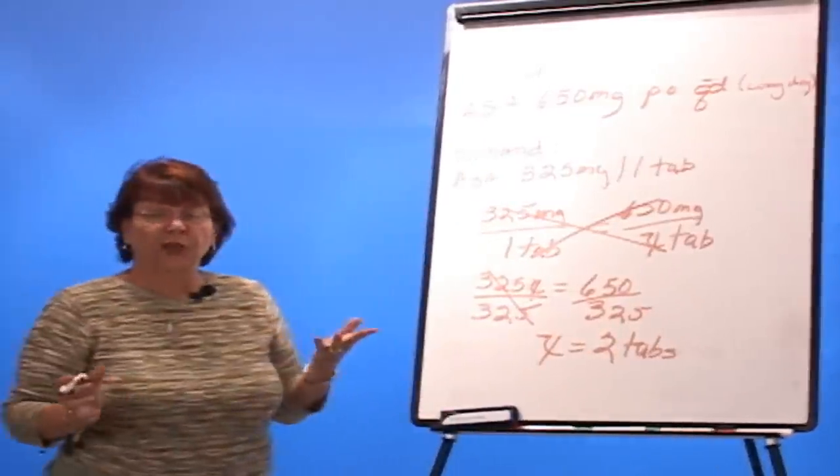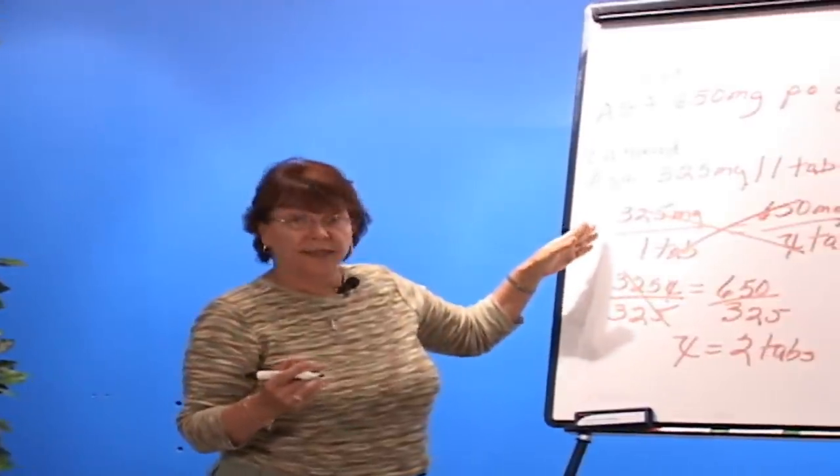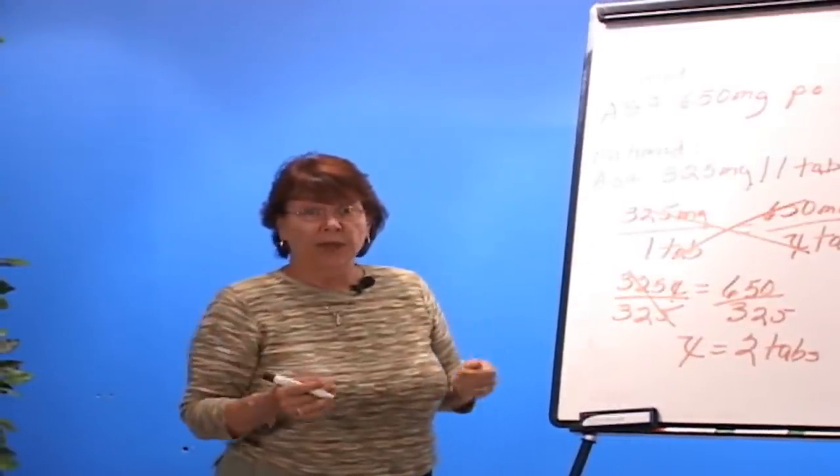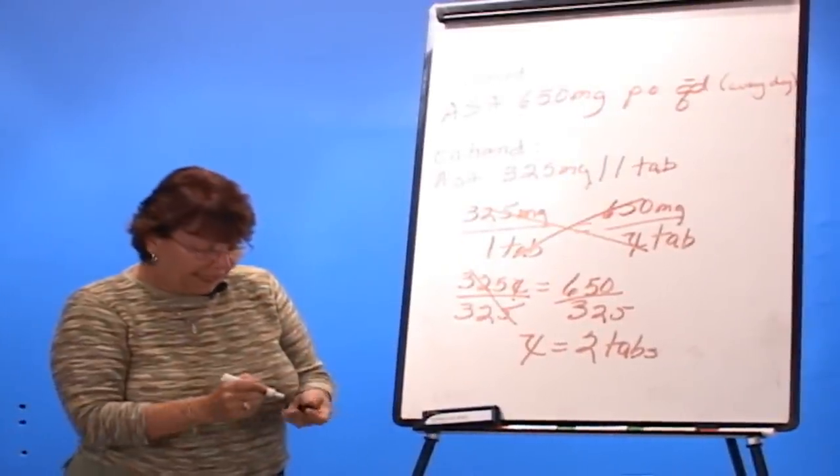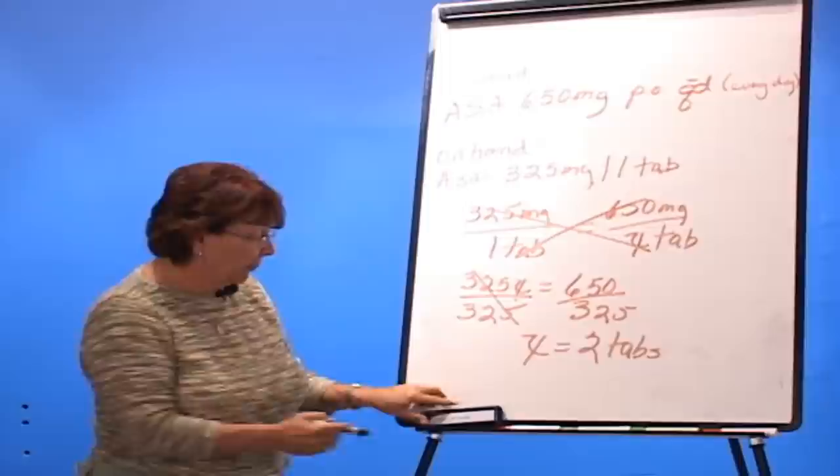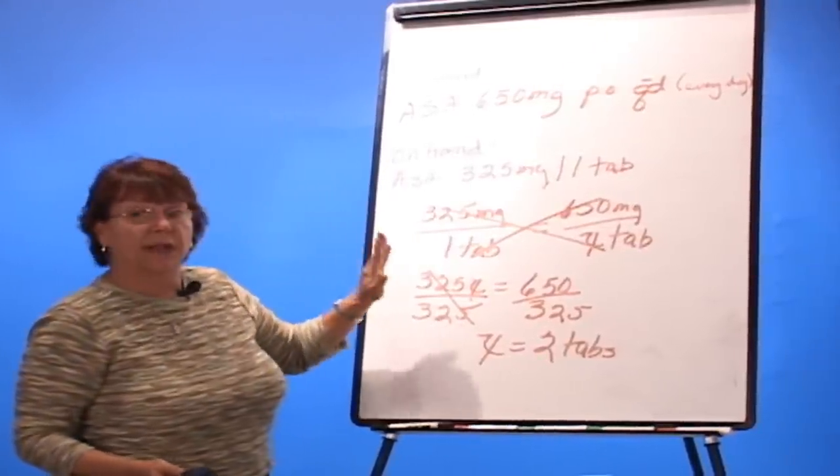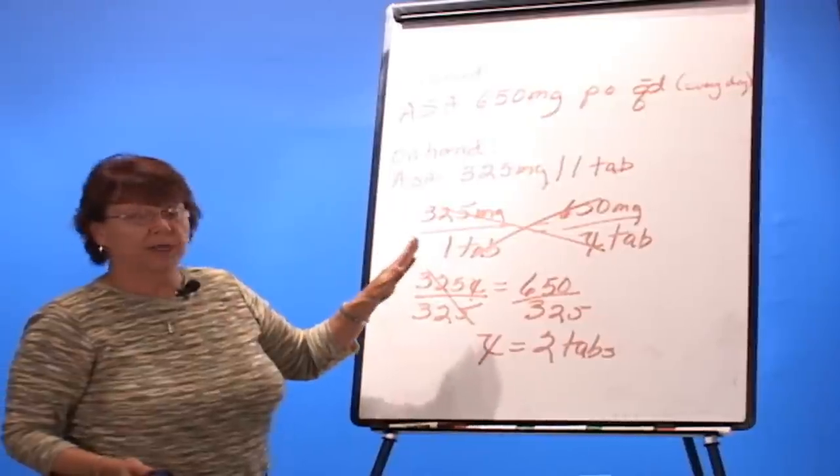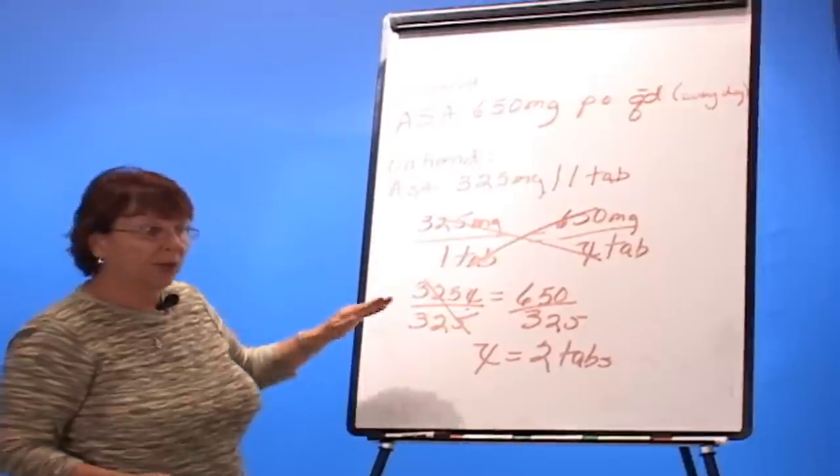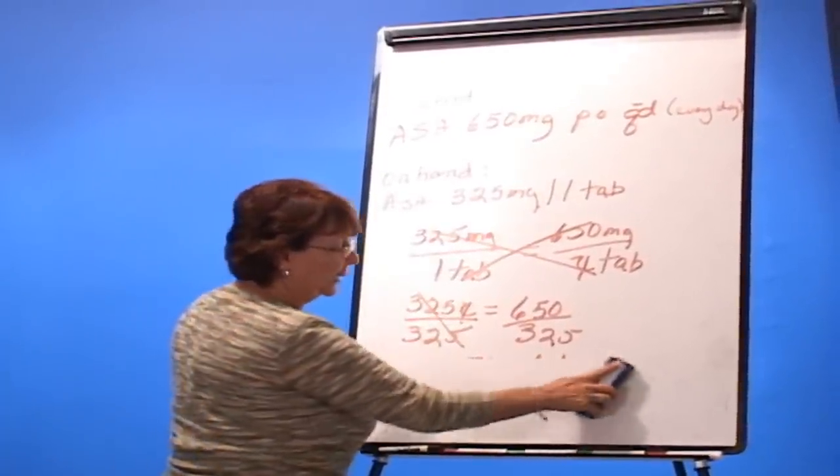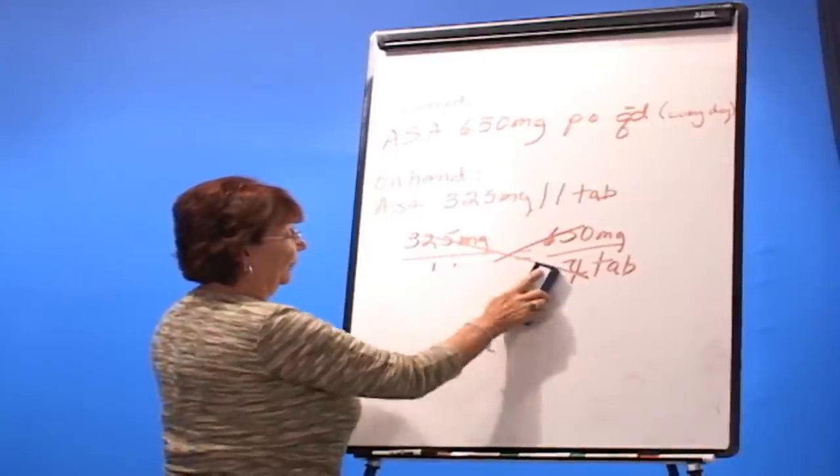You can do ratio and proportion either way that you want to, desired over half or you can do it out long ways to the side. But again, the whole key to doing pharmacology math is to make sure that you do every step, don't take shortcuts, and label, label, label, so you understand exactly what it is that you want to give your patient.